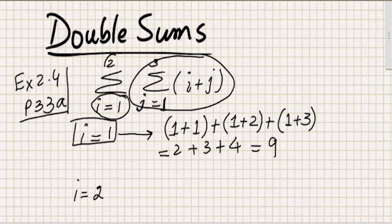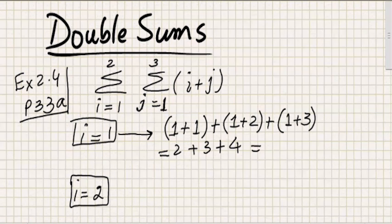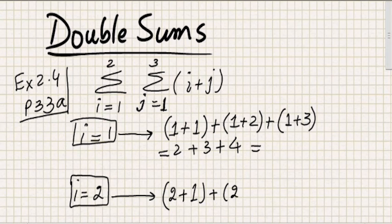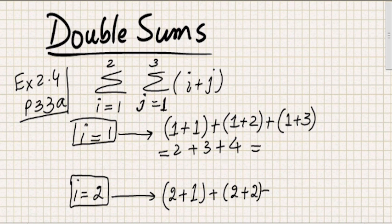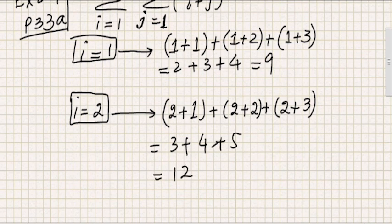Now I change the value of i to 2 and reiterate the internal summation for all possible values of j. With i fixed at 2, j changes from 1 to 2 to 3, giving us (2+1) + (2+2) + (2+3), which is 3 plus 4 plus 5, equaling 12.